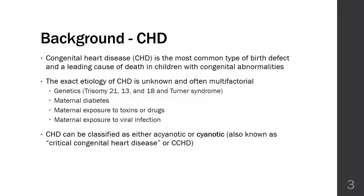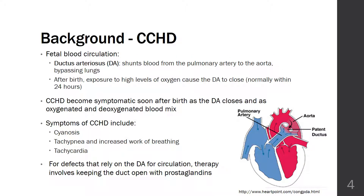Congenital heart disease can be further classified as either acyanotic or cyanotic, with cyanosis being a bluish discoloration of skin due to excessive lack of oxygen. This bluish color most often presents on toes, fingers, and face. The focus of this presentation will be on cyanotic defects, as this is where alprostadil treatment plays a role.